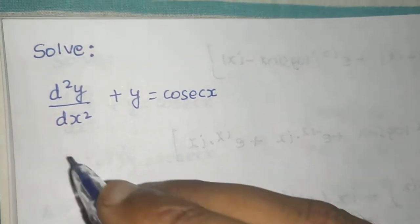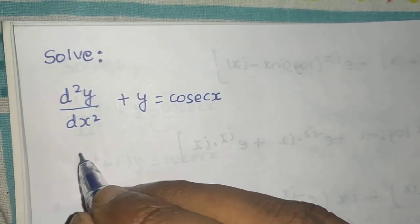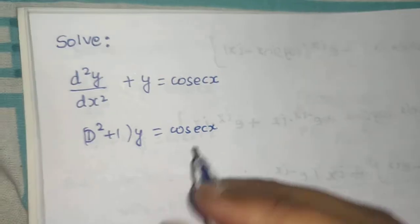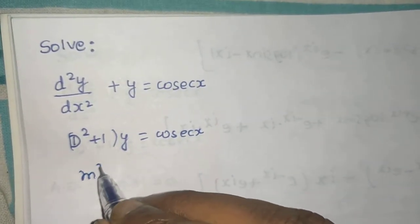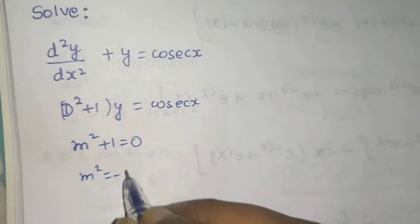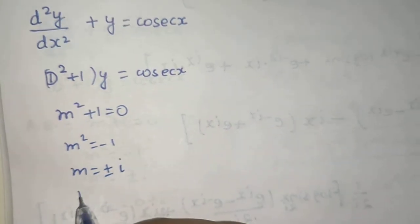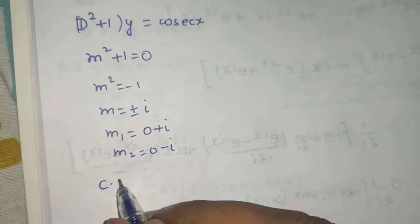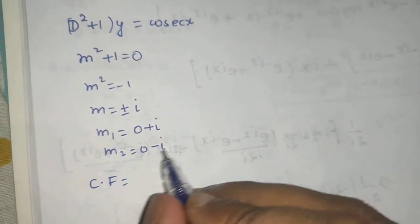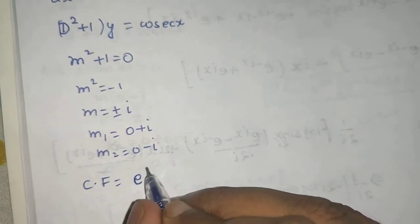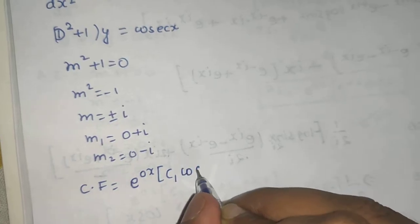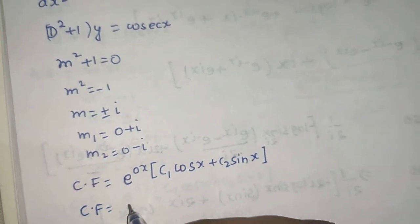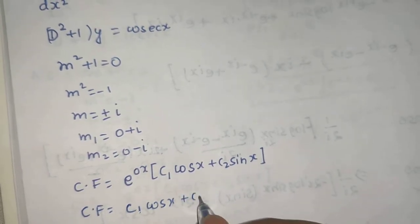First, let's find the complementary function. Convert the equation to (D² + 1)y = cosec x. For the auxiliary equation, replace D by m: m² + 1 = 0, giving m² = -1, so m = ±i. We can write m₁ = 0 + i and m₂ = 0 - i. Therefore, the complementary function is e^(ax)(c₁ cos bx + c₂ sin bx), where a = 0 and b = 1, giving CF = c₁ cos x + c₂ sin x.